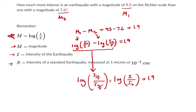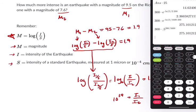But what do we do with this? We can rewrite this using the definition of a log. This is base 10, so 10 to the 1.9 equals the ratio of the two intensities. So it'll tell you how much more intense one intensity is than the other.